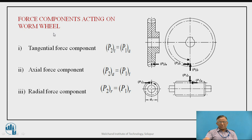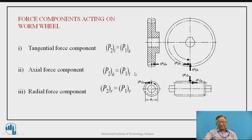Once forces on the worm are known, forces on the worm wheel are determined by force balance. Under equilibrium: the tangential force on the worm wheel P2T equals the axial force on the worm P1A; the axial force on the worm wheel P2A equals the tangential force on the worm P1T; and the radial forces are equal. This completes the force analysis for the worm gear system.